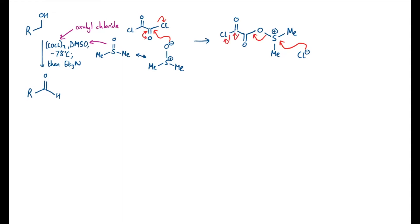So the leaving group kind of falls to bits, which is one of the main reasons for it being driven forwards. And we generate one of the key intermediates in this mechanism, which is this chlorosulfonium species. Just to note what's been lost in that reaction: there's a loss of CO2 gas, a loss of carbon monoxide also as a gas, and a loss of a chloride.